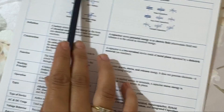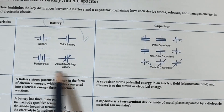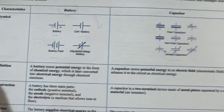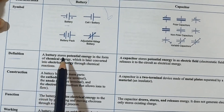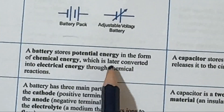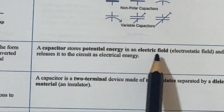Main differences between battery and capacitor. In terms of definition: a battery stores potential energy in the form of chemical energy, which is later converted into electrical energy through chemical reactions. A capacitor stores potential energy in an electric field (electrostatic field) and releases it to the circuit as electrical energy.